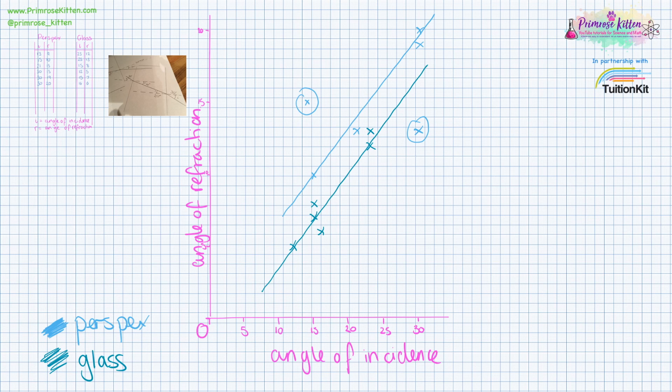So we can see that for both sets of results, the angle of refraction and the angle of incidence for perspex and glass, we do have a nice relationship. A straight line relationship, these lines look to be parallel to each other, but they are not the same. That's because when we are going from air into perspex, or air into glass, there's going to be a different change in refractive index.